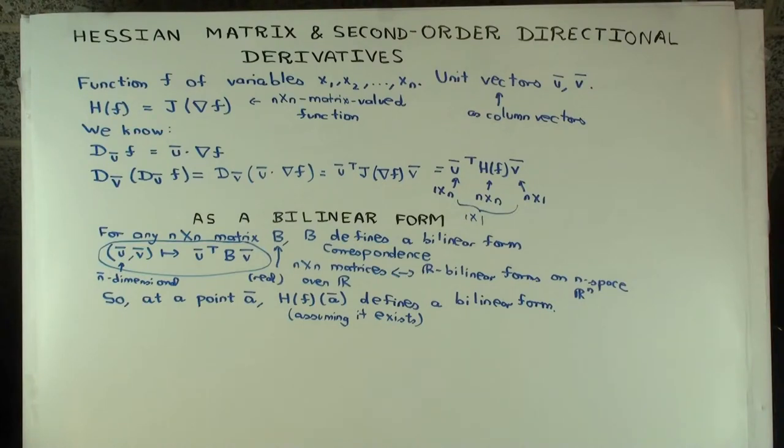So first some preliminaries from linear algebra. So if you have a n cross n matrix, it's a square matrix, n rows, n columns, and we'll call that matrix B, and let's say the entries are real numbers. Then B defines what's called a bilinear form. How does it define that?